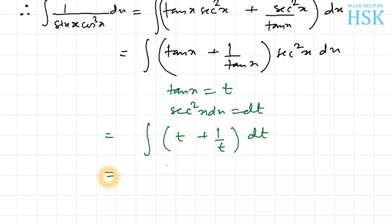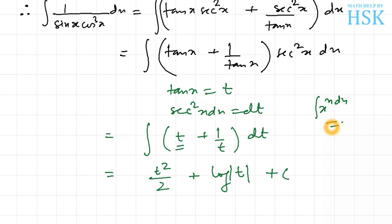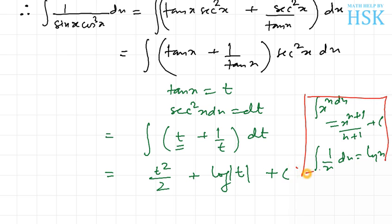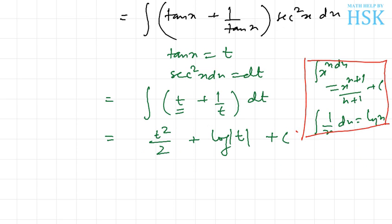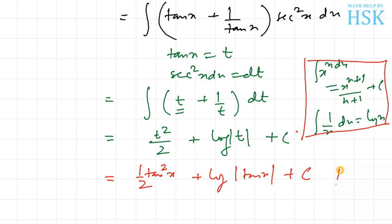Using standard integration formulas — integration of t gives t²/2, and integration of 1 upon t gives log t — and substituting back t = tan x, the final answer is (1/2) tan square x + log of tan x + C.